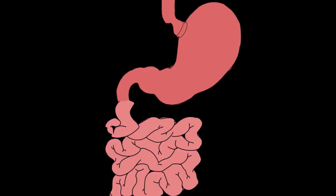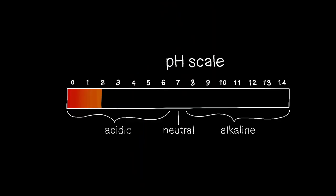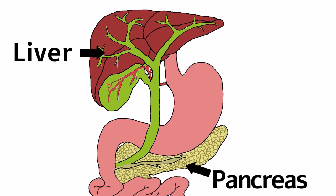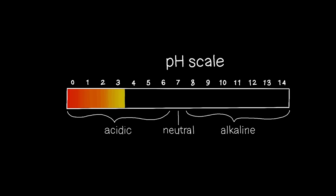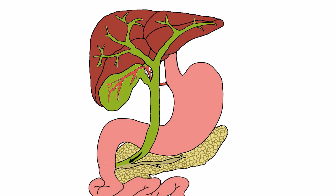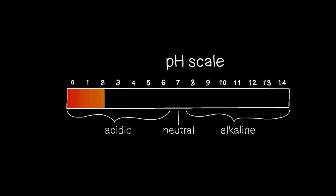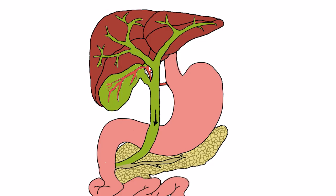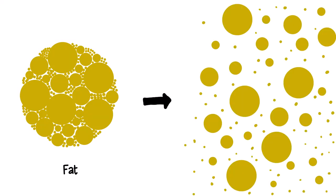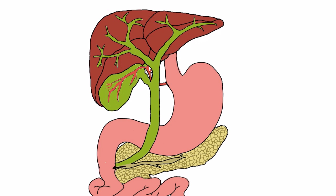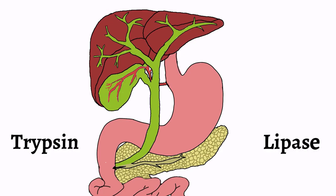When food is released from the stomach into the small intestine, it is quite acidic. Pancreatic enzymes don't work well in acidic conditions — they need an alkaline or basic pH. So bile juice, secreted by the liver, creates an alkaline medium so that the pancreatic enzymes can work. Bile juice also emulsifies fat — it breaks large fat globules into smaller ones, increasing the surface area for enzymes to digest the fat. The pancreas secretes pancreatic juice containing two key enzymes: trypsin, which digests proteins, and lipase, which digests fats.